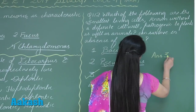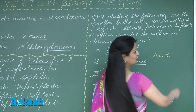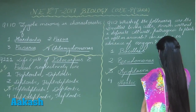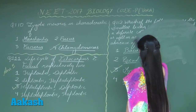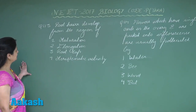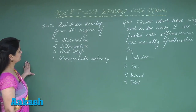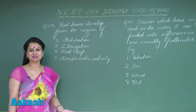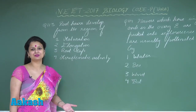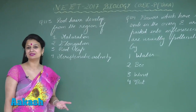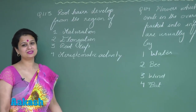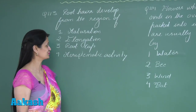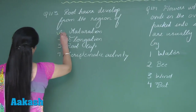Moving on to question number 113: root hairs develop from the region of differentiation zone, which is also known as the maturation zone. So the right option for this question is option number one.